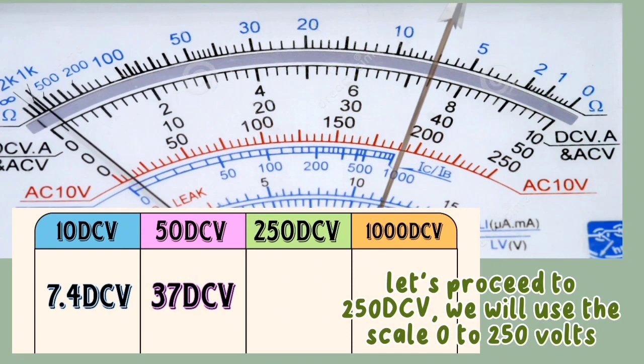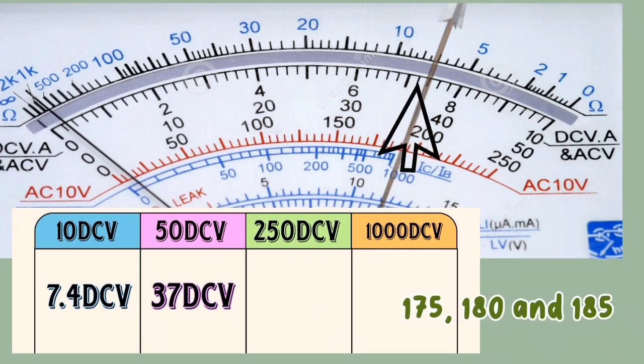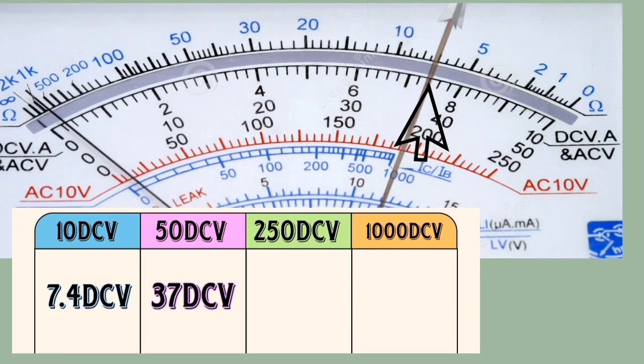Let's proceed to 250 DCV. We will use the scale 0 to 250 volts. Between 150 and 200 is 175, so 175 plus the value of the two markings that have a value of 5: 175, 180, and 185. Our 250 DCV is 185 DCV.